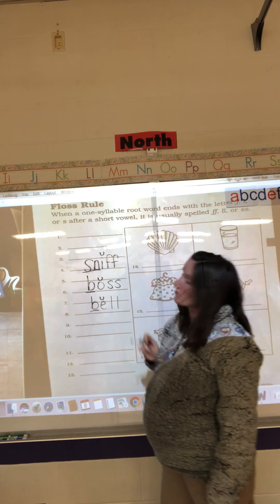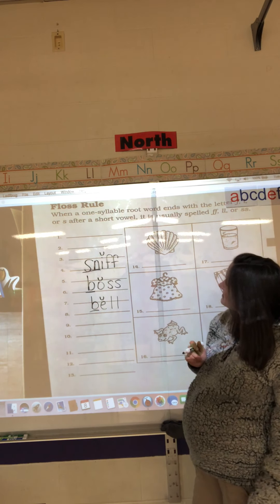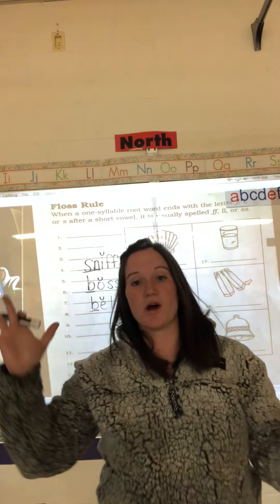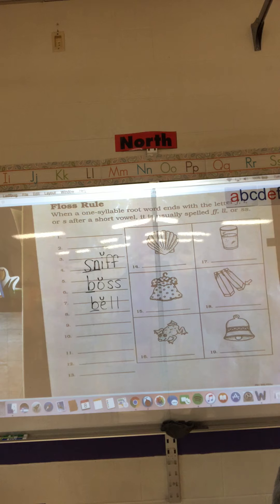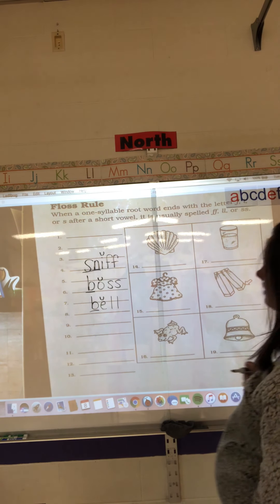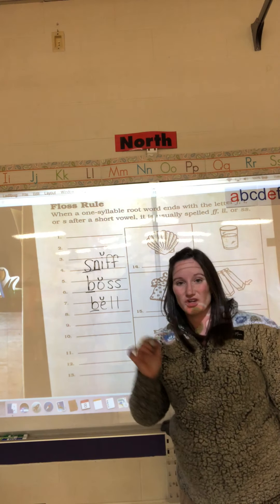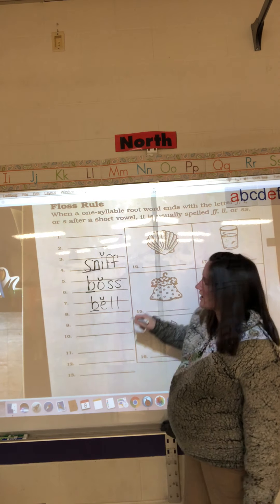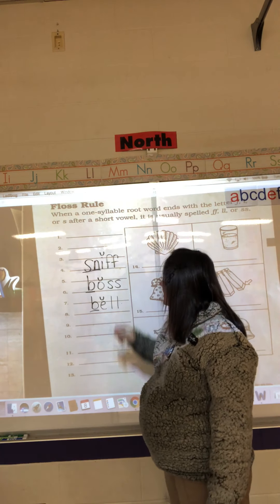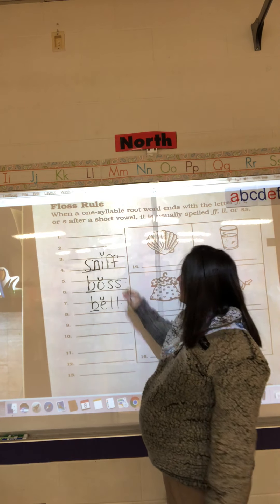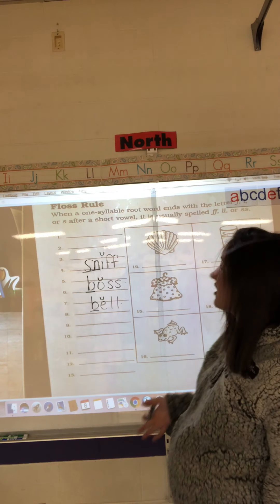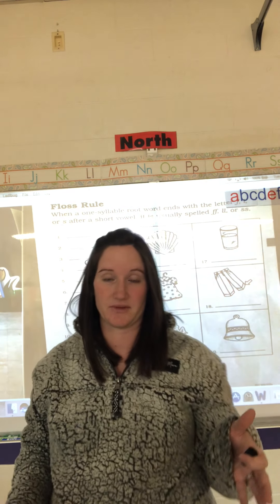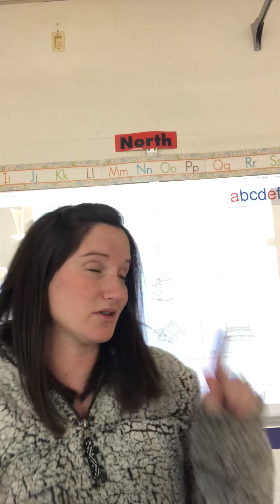So if you read your words at the top, it says: when a one-syllable root word — one syllable means one clap — ends with the letter F, L, or S after a short vowel sound, it is usually spelled FF, LL, SS. Those are the three letters that we will double.